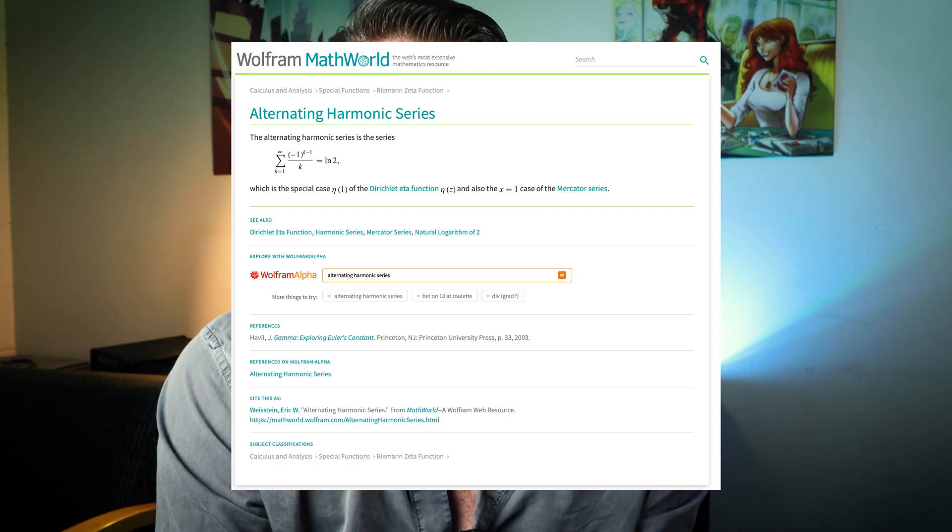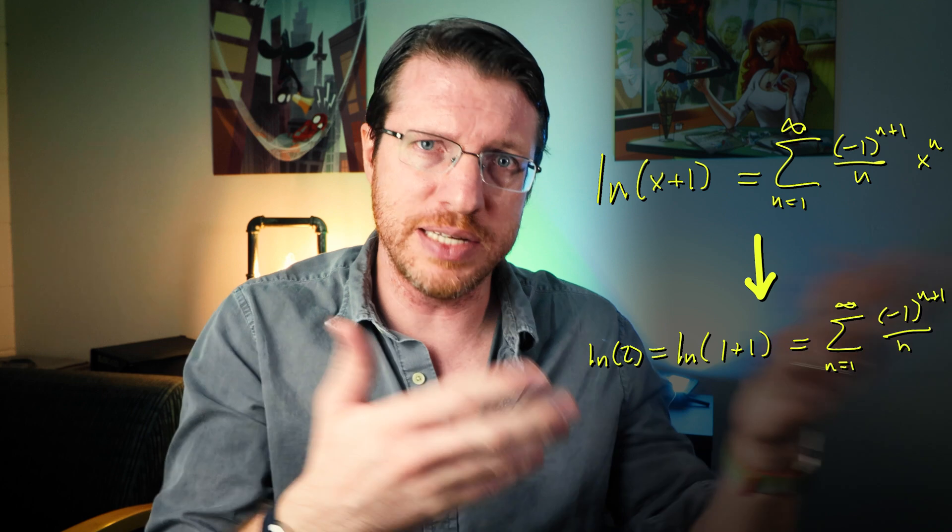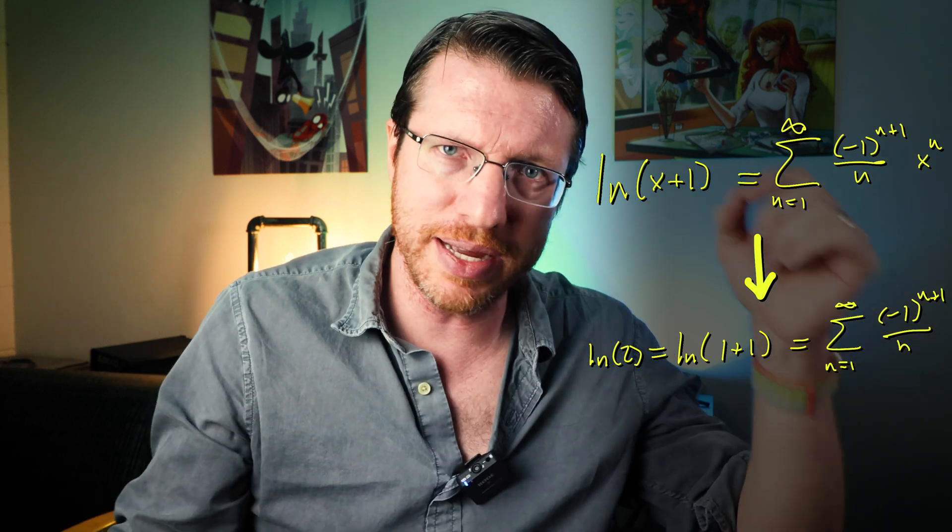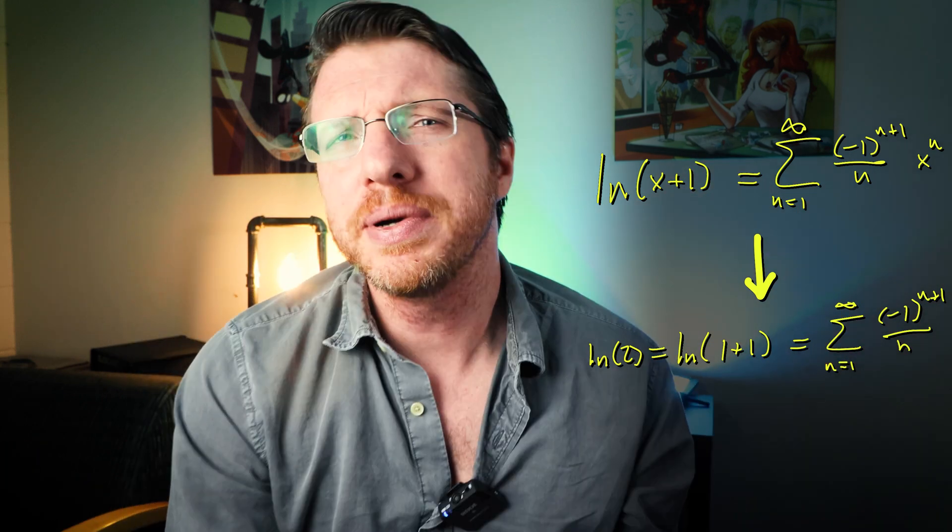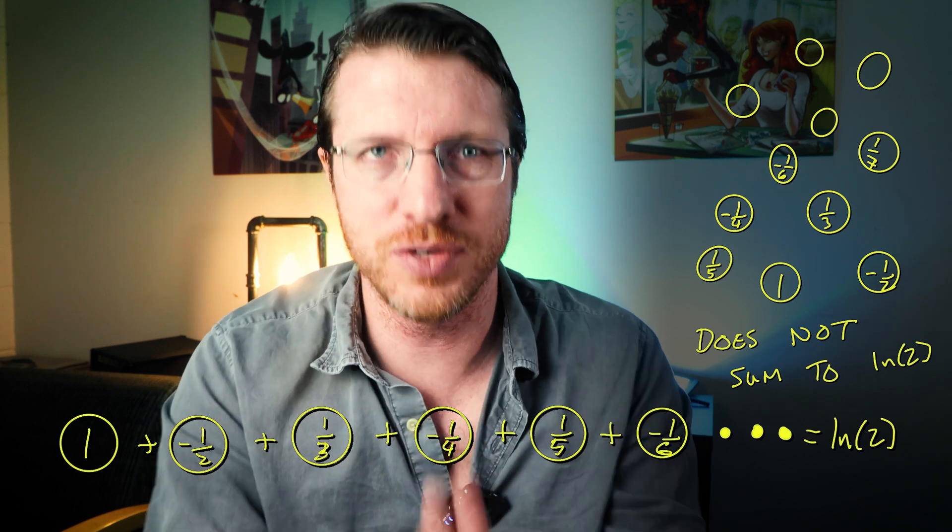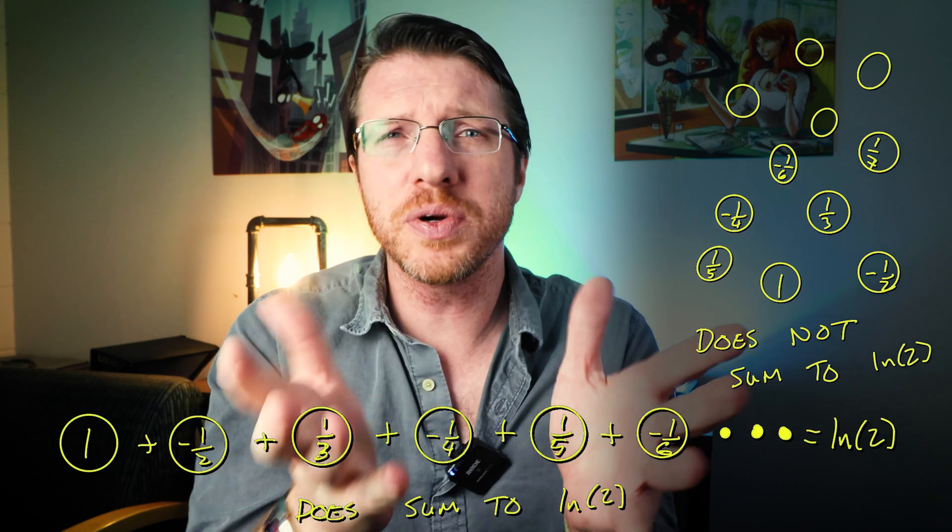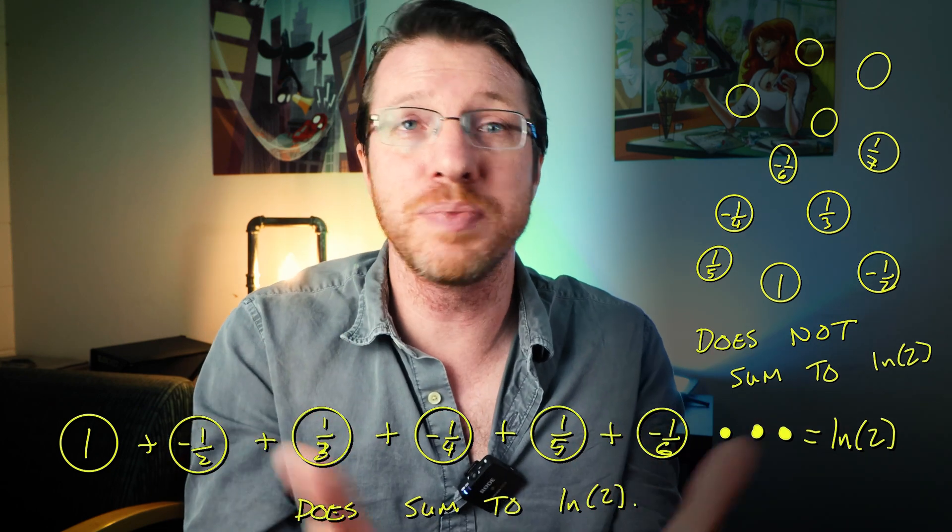But what does it converge to? This one in particular, we are told converges to the natural log of 2. But does it really? I mean, yes, it does. Don't get me wrong. The really weird thing is that it isn't the collection of numbers that adds up to the log of 2, it's the sequence that adds to the log of 2.